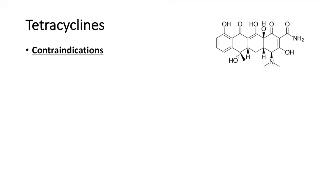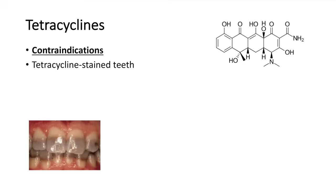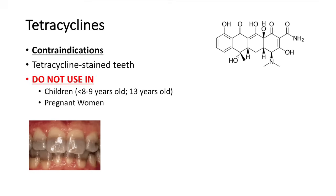Unfortunately, tetracyclines have some contraindications for their use. One of the biggest ones is tetracycline-stained teeth — here's a picture of an individual with tetracycline-stained teeth, showing a black band across the teeth — and this occurs during tooth development. That is why we do not use tetracyclines in children. It is an absolute contraindication in children under the age of 8 or 9 years of age, and a relative contraindication in children under the age of 13. We also do not use tetracyclines in pregnant women for the same reason.